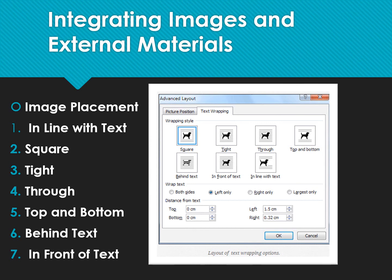We also use image placement — this is a setting we need to apply so that we can position our pictures in the document. There are different positions for images. The first one is 'In Line with Text,' which is usually used when you need to place your image at the beginning of a paragraph. 'Square' is used for inserting an image anywhere within the paragraph. 'Tight' is almost the same as Square but the text conforms to the general shape of the image.